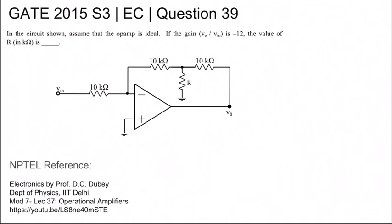This is GATE 2015 Set 3 EC question number 39. In the circuit shown, assume that the op-amp is ideal. If the gain V0 by Vin is minus 12, then the value of R in kilo-ohms is being asked.